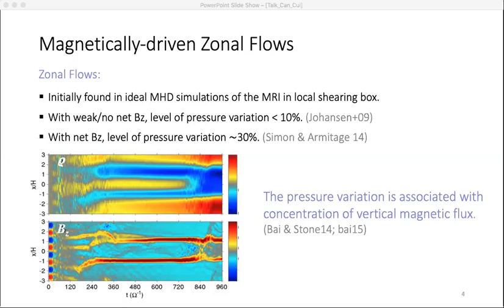Forming the gap is natural, because when there is stronger BZ, the disk will launch stronger MHD winds that more efficiently deplete the gas locally.